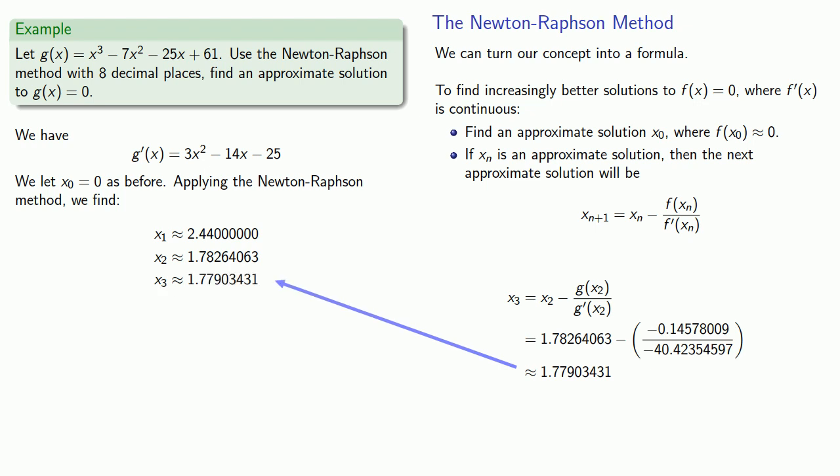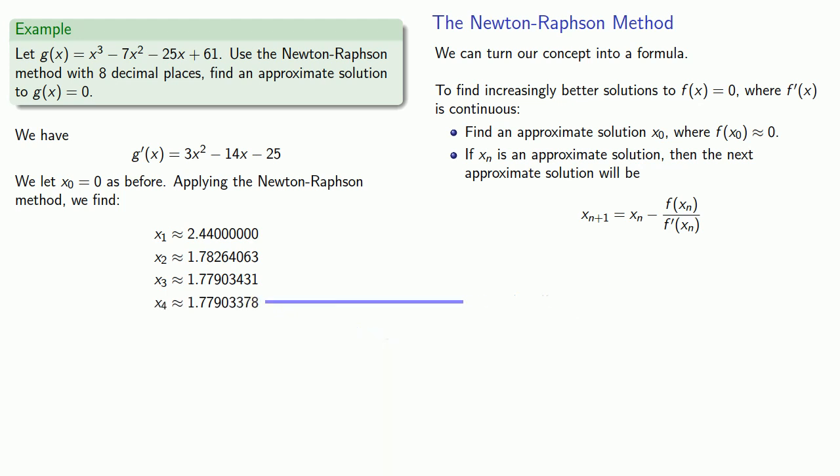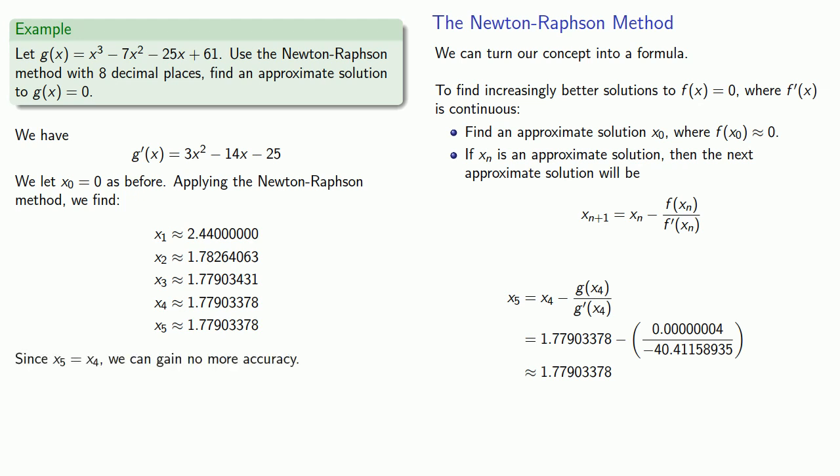I can keep going. But when I get to x₅, it's the same as x₄, and so I can gain no more accuracy. This is the most accurate I can be with this method. If I want a more accurate solution, I need to have kept more decimal places.